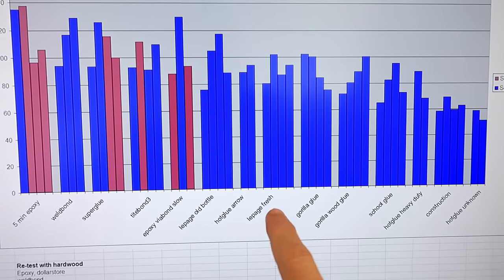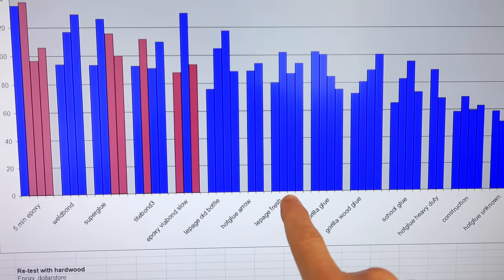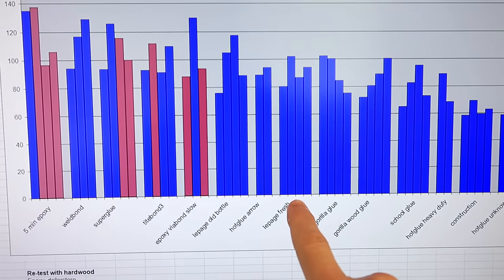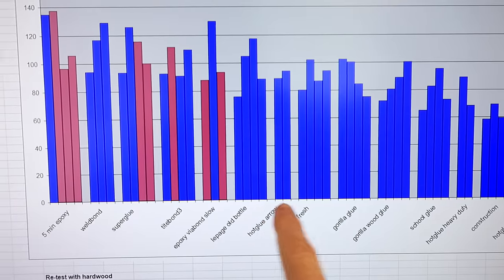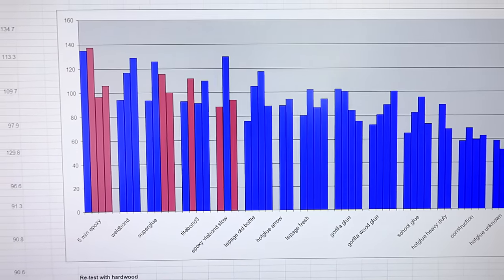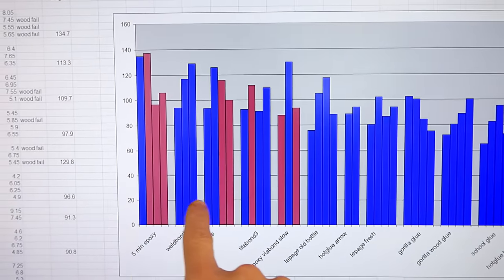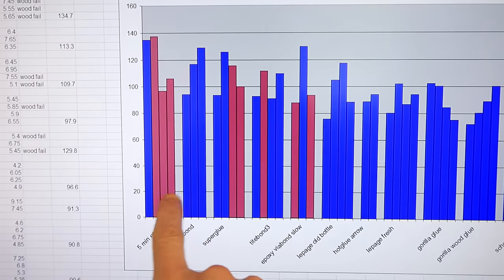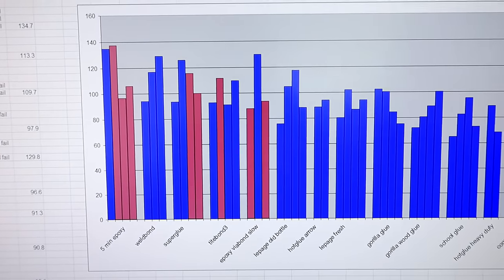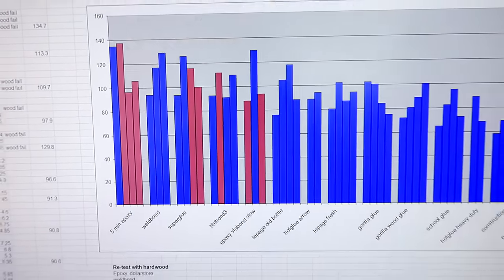So, interestingly enough, the fresh bottle of LePage Carpenter's glue was a little bit weaker on average than the old stuff, so I think that's just random variations. And with quite a few wood failures here, the ones in red are really mostly wood failures, I really need to retest the stronger glues with hardwood.